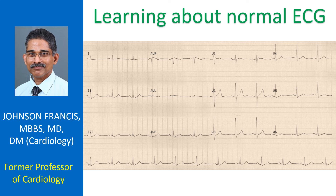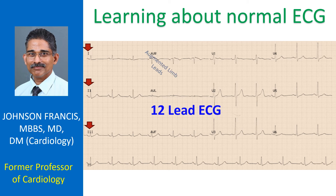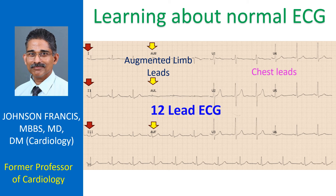Here is a normal 12-lead ECG. A 12-lead ECG consists of 3 standard limb leads — leads 1, 2, and 3 — 3 augmented limb leads: AVR, AVL, and AVF, and 6 chest leads, V1 to V6.